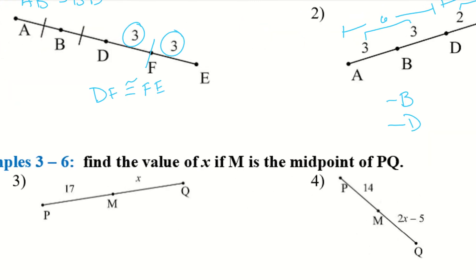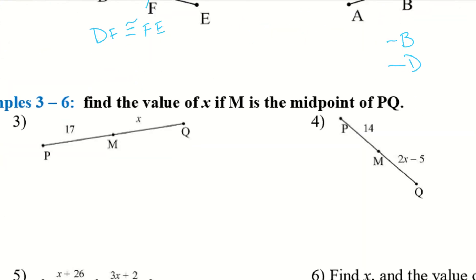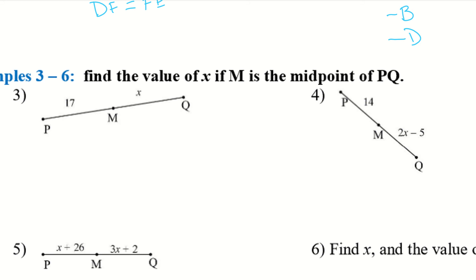So let's go ahead and work on finding variables if we know that we have a midpoint. So if we know we have a midpoint, so all these M is our midpoint, I know that this side has to be equal to that side. So whatever these terms are, I'm going to set them equal to one another. So number three was super simple. Since one side was 17 and the other side was X, then 17 has to equal X.